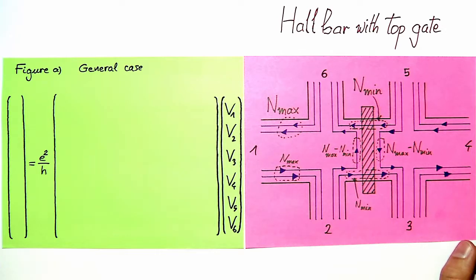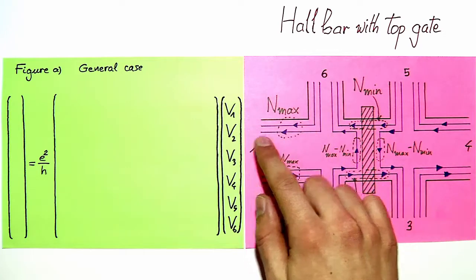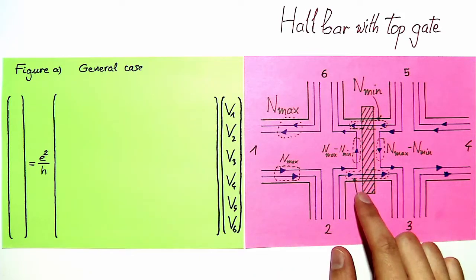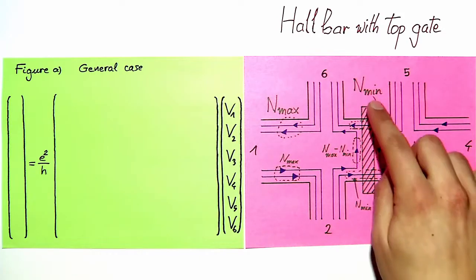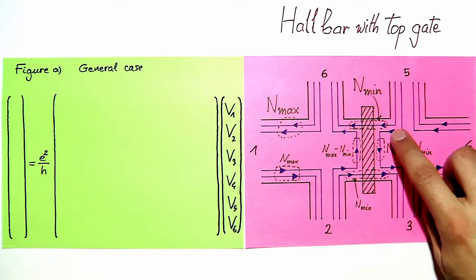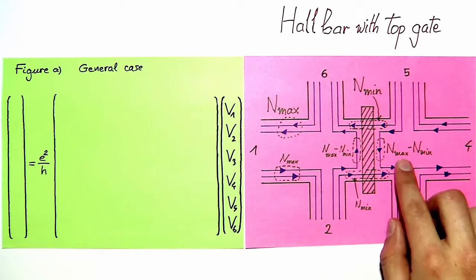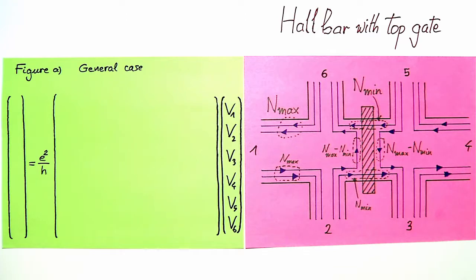But now we assume that we have a number n_max of edge channels along the edge in the bulk of the sample far from the top gate, and that under the top gate n_min edge channels are transmitted. So that here along the top gate n_max minus n_min modes are transmitted to the other side of the hall bar.